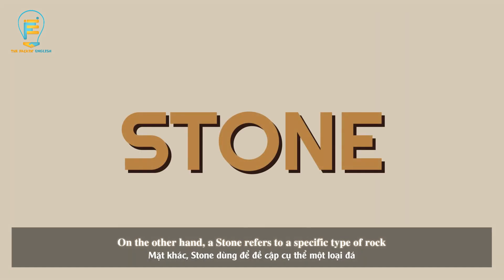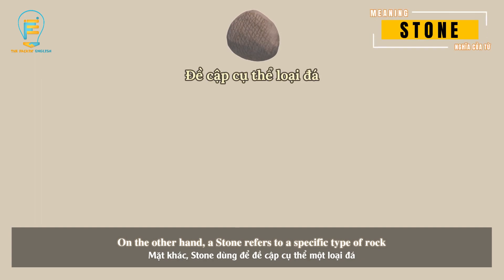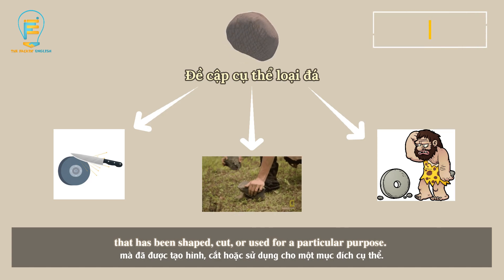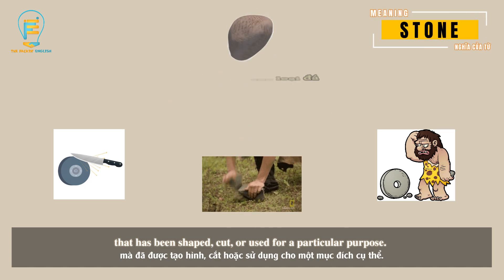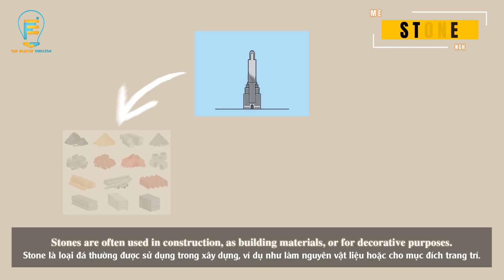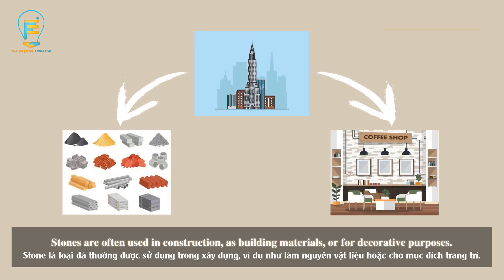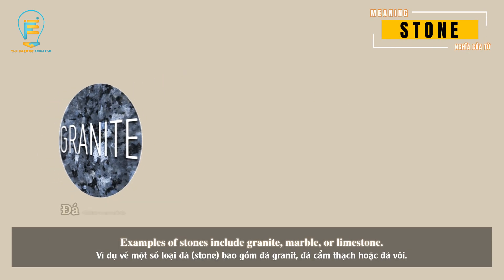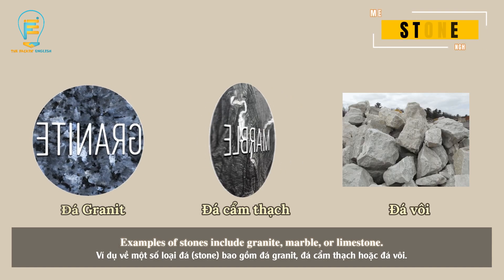On the other hand, a stone refers to a specific type of rock that has been shaped, cut, or used for a particular purpose. Stones are often used in construction as building materials or for decorative purposes. Examples of stone include granite, marble, or limestone.